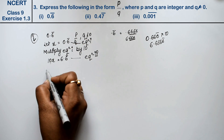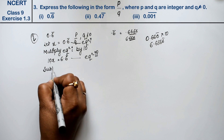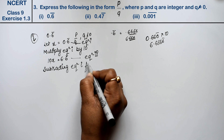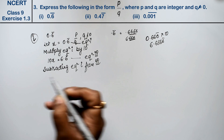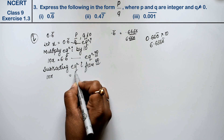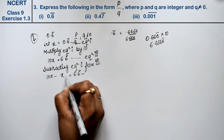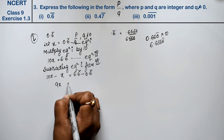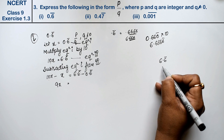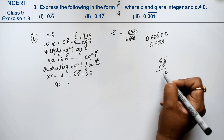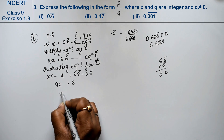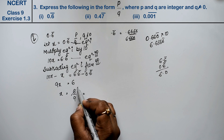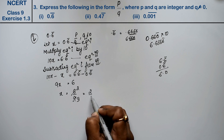Now we subtract equation first from equation second. Second minus first: 10x minus x gives 9x, and 6.6̄ minus 0.6̄ gives 6. So 9x equals 6, which means x equals 6/9. Simplifying by dividing by 3: 2/3 is the answer.